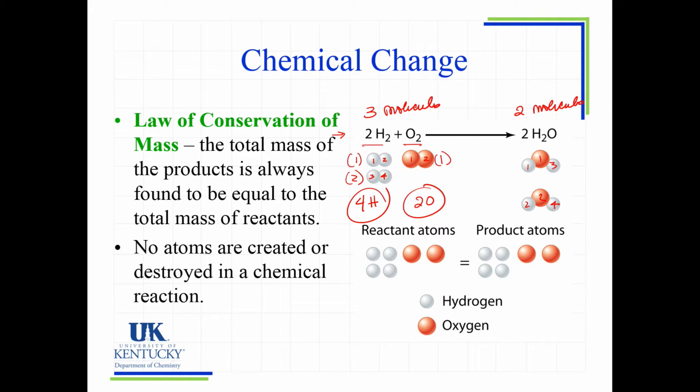When a chemical reaction takes place, no atoms are created, no atoms are destroyed. So you've got to learn how to write, and we will work on this later. We have to be able to write a reaction where we know that the law of conservation of mass is being obeyed.